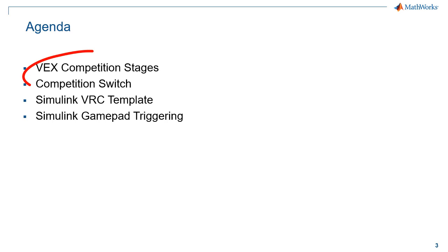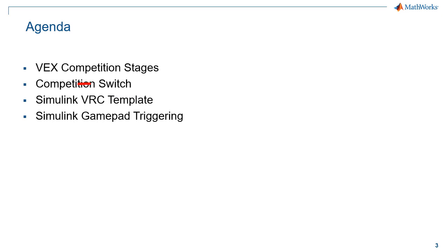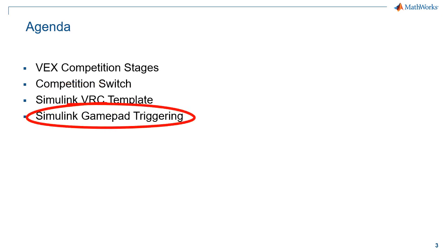We will be covering both of those scenarios: how the VEX Competition Switch works and how you can organize your Simulink models so that they are triggered by the switch or the buttons on your GamePad. First, we'll give a brief description of the VEX Competition Stages, then walk through the Simulink VRC template, and finally demonstrate how to use the GamePad buttons to trigger your driver and autonomous algorithms.